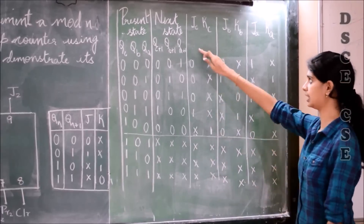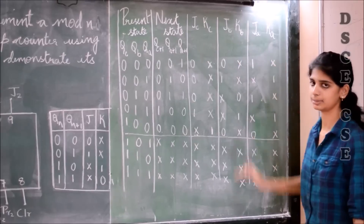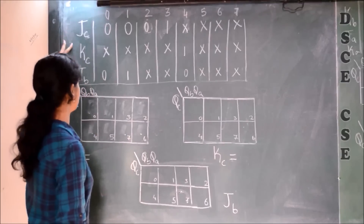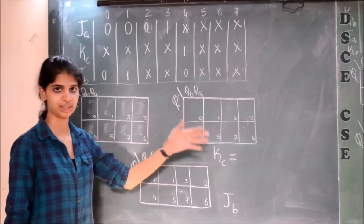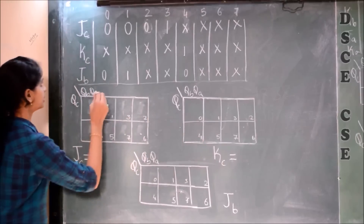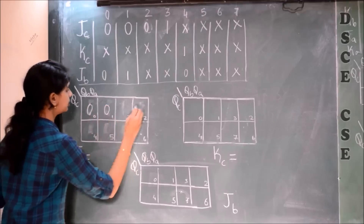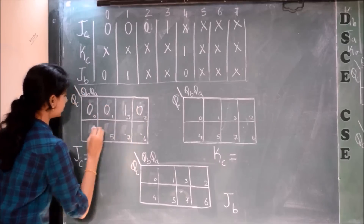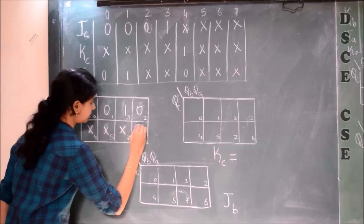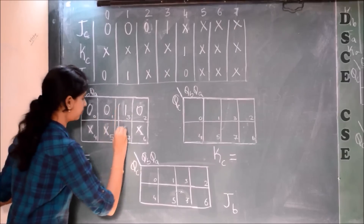Now let us draw the K-map for JC, KC, JB, KB, and JA/KA respectively. For JC, the values are 0, 0, 0, 0, 1, and the remaining are don't cares. From this K-map, we get a pair form.